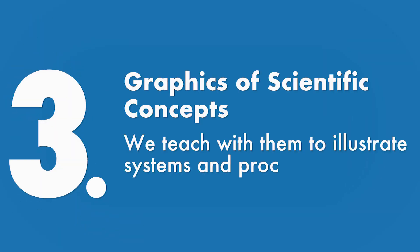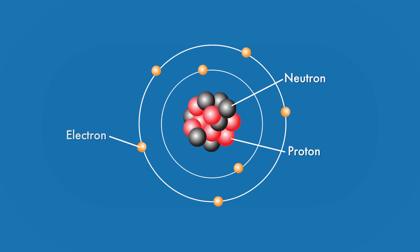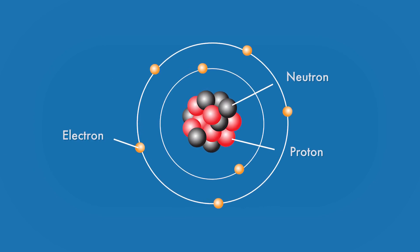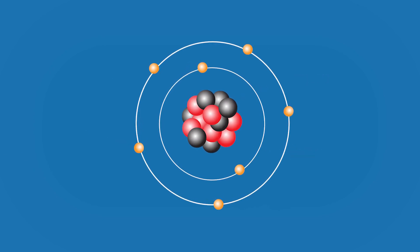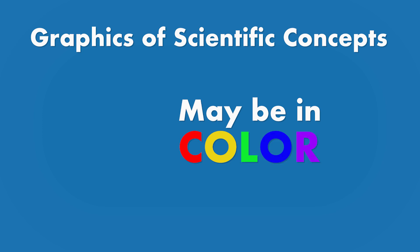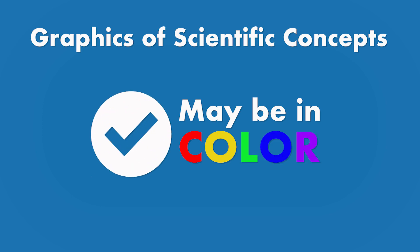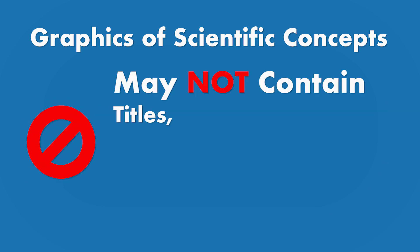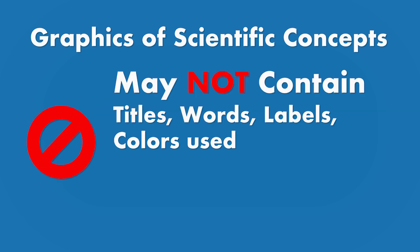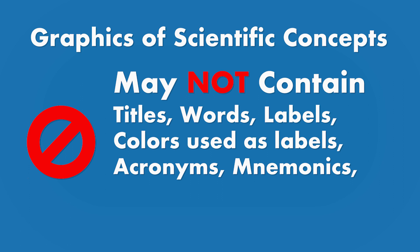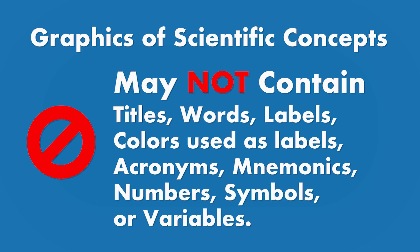Number three: graphics of scientific concepts. We teach with them to illustrate systems and processes. When we convert them to supplemental aids for the test, they may be in color but may not contain titles, words, labels, colors used as labels, acronyms, mnemonics, numbers, symbols, or variables.